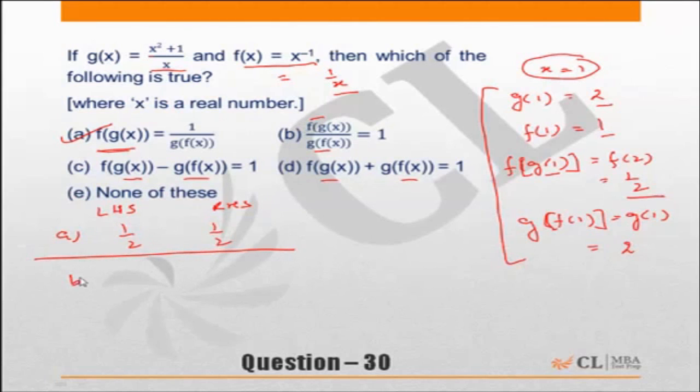What about choice B? Choice B: f of g(x) upon g of f(x), or in our case, f of g(1) upon g of f(1). f of g(1) is 1 by 2, and g of f(1) is 2. This is equal to 1 by 4, but right-hand side is 1. These are not equal, so choice B is incorrect.